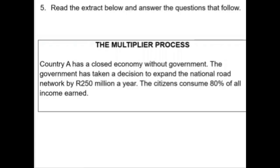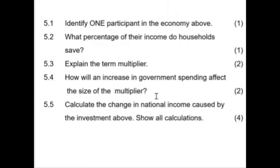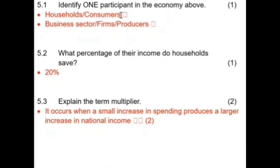Let's start with the first question: identify one participant in the economy above. By way of eliminating, we eliminated the foreign sector and the government, so you could only answer one of two things — either the households or the businesses. They only ask for one, so don't waste your time writing more than one. It's a low order question worth one mark.